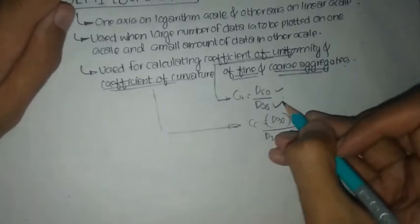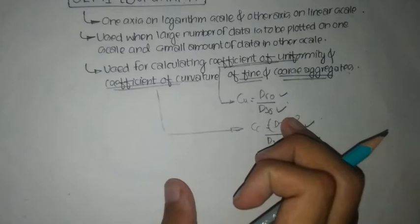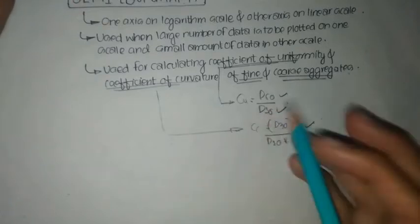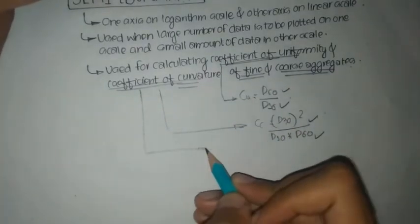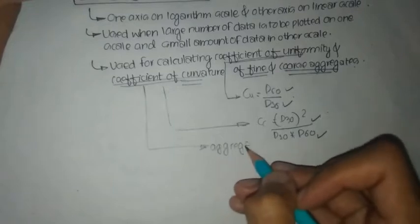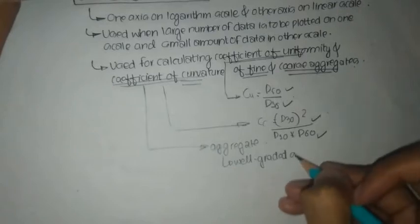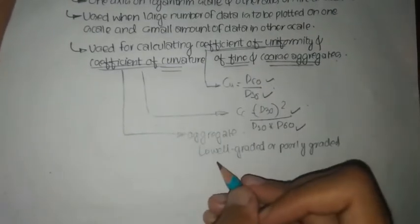The coefficient of curvature gives us information about whether the aggregate is well graded or poorly graded. If the value of the coefficient of curvature ranges between 1 and 3, the aggregate is said to be well graded. If the value does not lie in this range, it is said to be poorly graded.